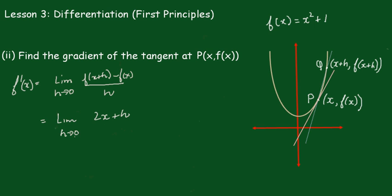From our limit theory, as h approaches 0, the limit will simply equal 2x.